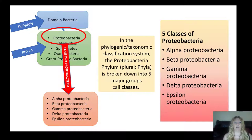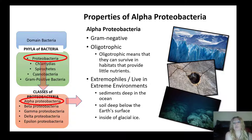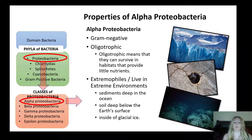The proteobacteria phylum is separated into five classes: alpha, beta, gamma, delta, and epsilon. The alpha proteobacteria are all gram-negative and oligotrophic, meaning they can survive in habitats that provide very few nutrients. These are extremophiles that live in extreme environments such as deep ocean sediments, deep soil below the Earth's surface, or even inside glacial ice.